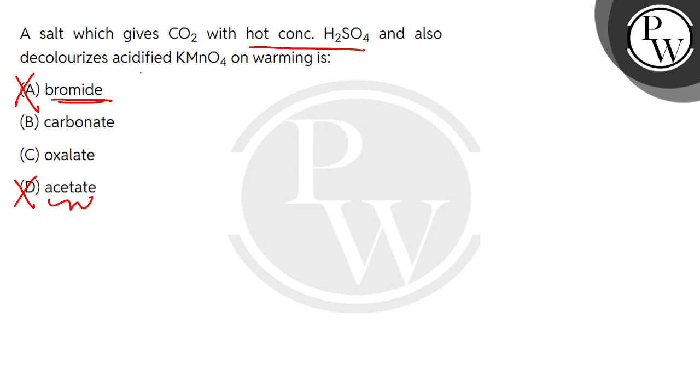But now, what will it react with KMnO4? What is acidified KMnO4? It is an oxidizing agent, so we need it to react with a reducing agent. Carbonate is CO3^2-, here carbon is in its +4 oxidation state. That is its maximum oxidation state, which means it cannot be oxidized further.